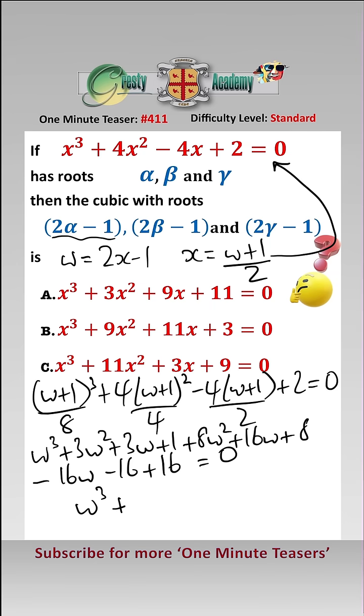Simplifying all that by collecting like terms gives us w cubed add 11w squared add 3w add 9 equals 0, which is answer C.